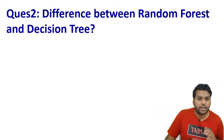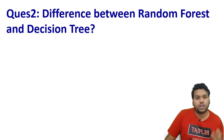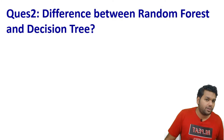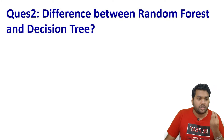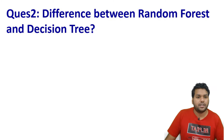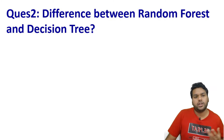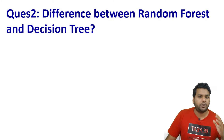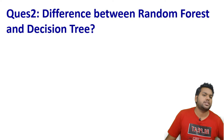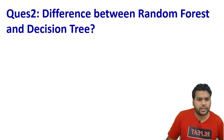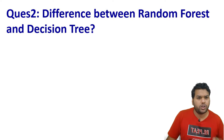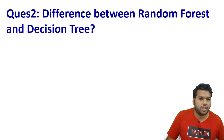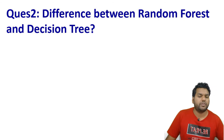Now moving to the second question: what is the difference between random forest and decision tree? As I have been saying, random forest uses decision trees as base learners. But the key difference comes when you consider the trade-off between interpretability and accuracy.